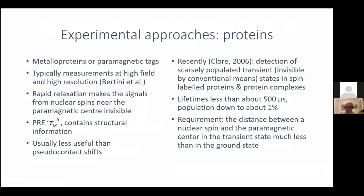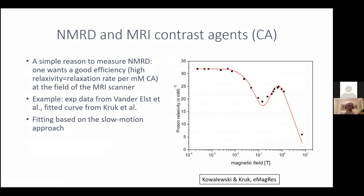If we want to make a good contrast agent, we need to know how it behaves as a function of magnetic field, because we want to do MRI at a certain magnetic field. We want a contrast agent with good efficiency — meaning high relaxation rate per millimolar concentration — at the field of the MRI scanner.